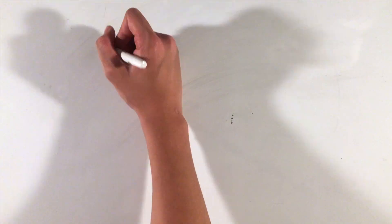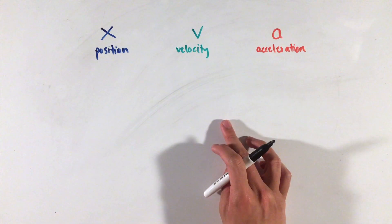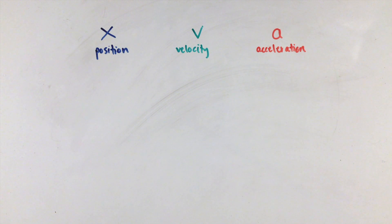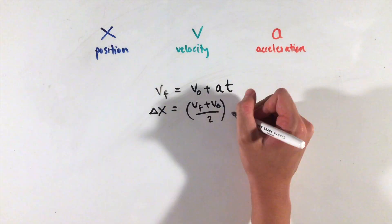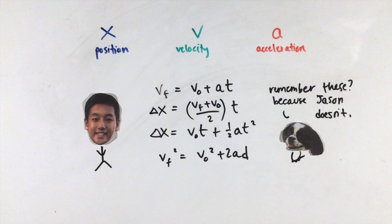Kinematics in AP Physics C is fairly similar to the unit from AP Physics 1. For example, the basic properties and definitions of position, velocity, and acceleration all still hold and can be found in my past videos. In addition, the four main kinematic equations that are used for uniform acceleration situations are still extremely useful as well.